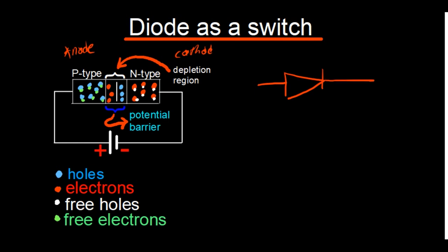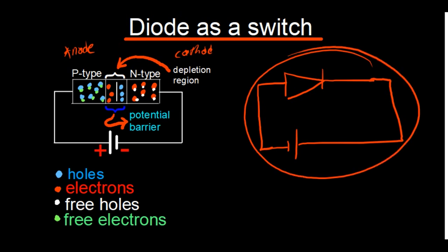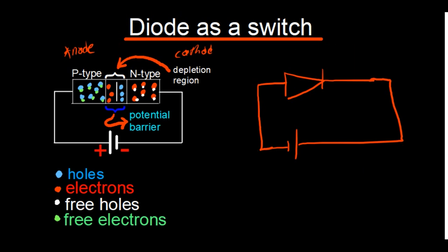If you have a DC source and instead of putting positive at the anode you put negative there and positive at the cathode, that circuit demonstrates reverse bias — and you're not going to have the flow of current unless the diode is faulty. This simply means the cathode voltage is more positive compared to the anode voltage, so current will not flow unless the diode is damaged.